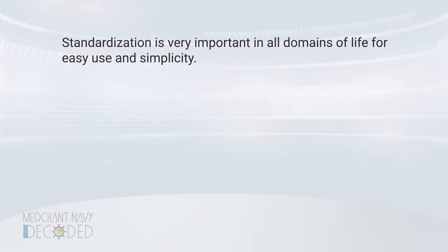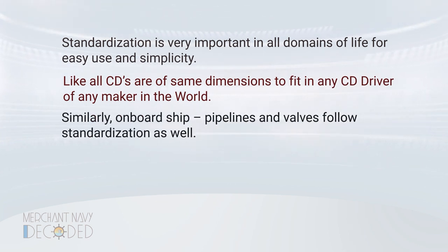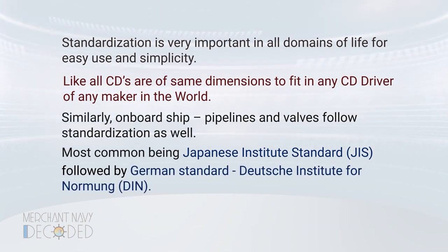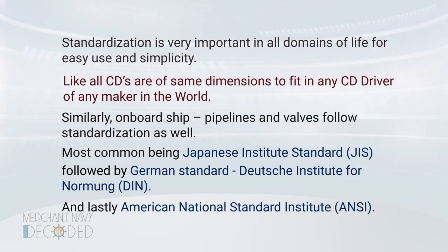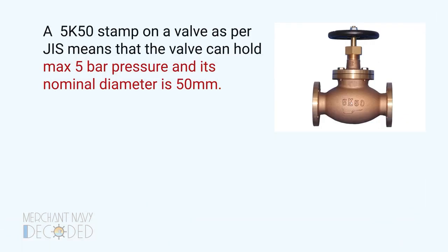Standardization is very important in all domains of life for easy use and simplicity — like all CDs are of the same dimensions to fit in any CD driver of any maker in the world. Similarly, onboard ship, pipelines and valves follow standardization as well. The most common being JIS — Japanese Institute Standard — followed by DIN — German Standard — and lastly ANSI — American National Standard Institute. A 5K50 stamp on a valve as per JIS means the valve can hold a maximum of 5 bar pressure and its nominal diameter is 50 mm.